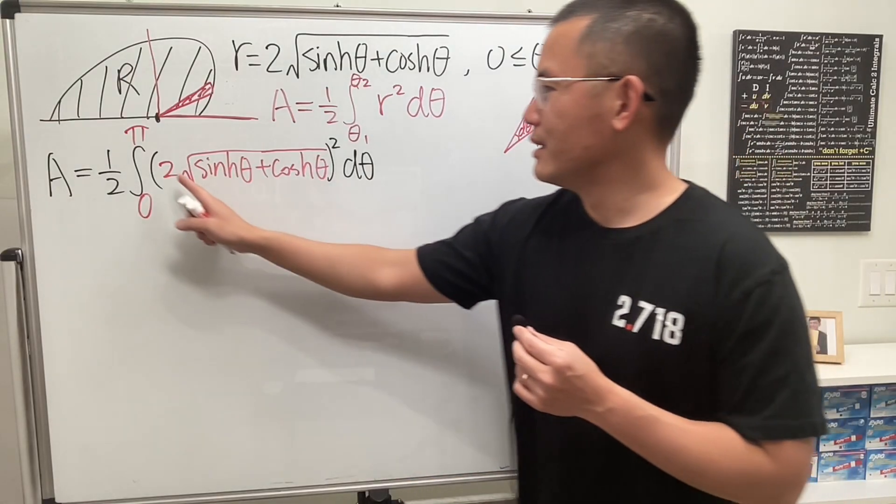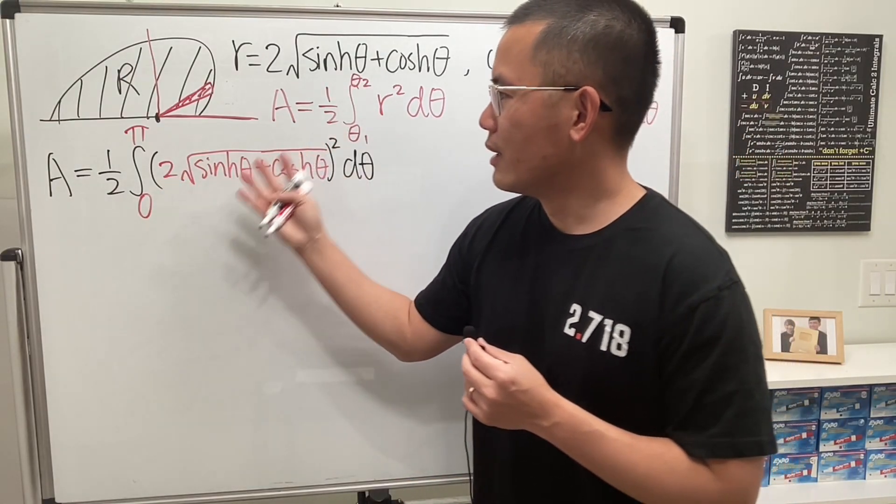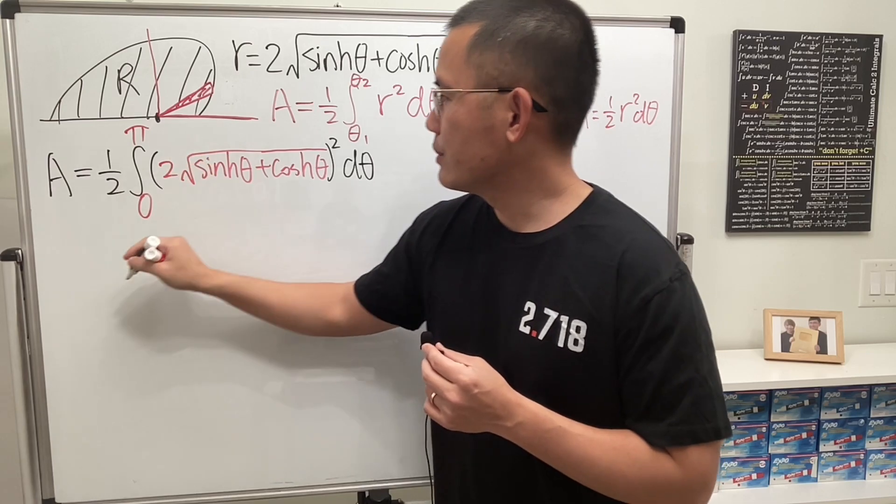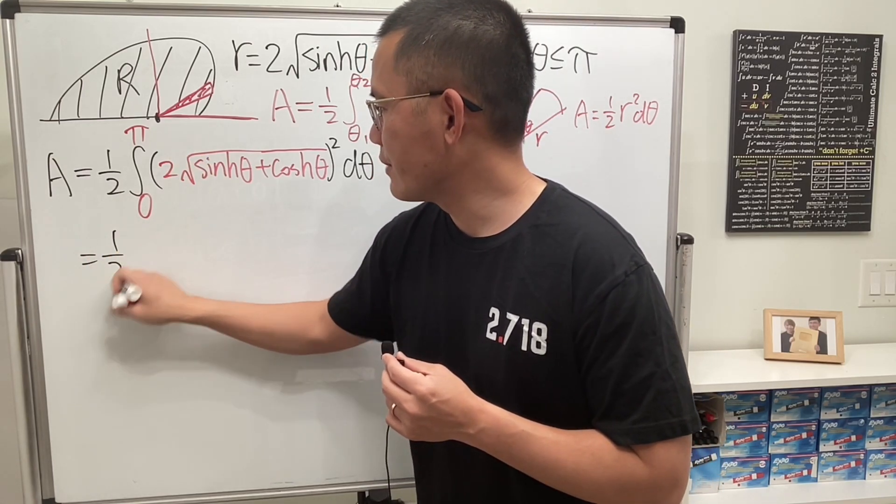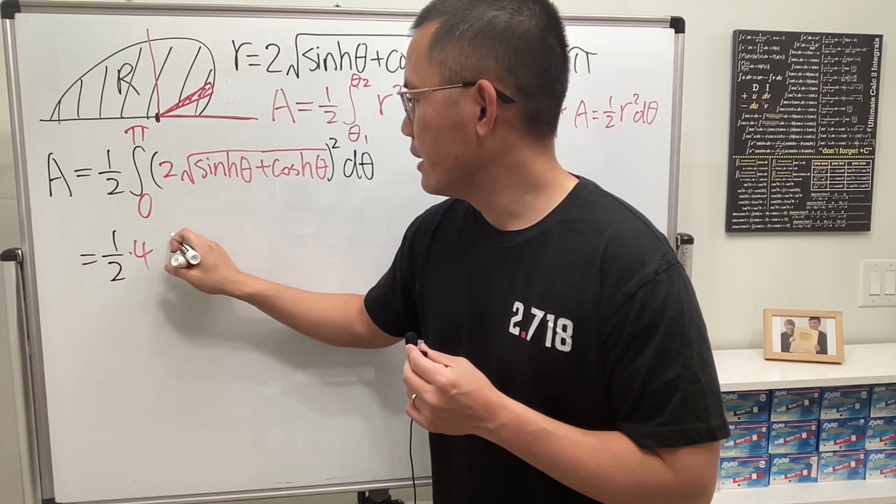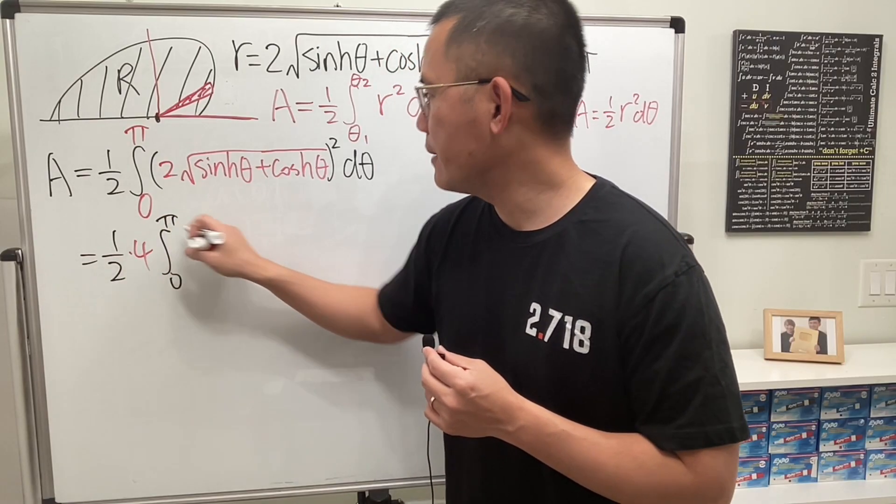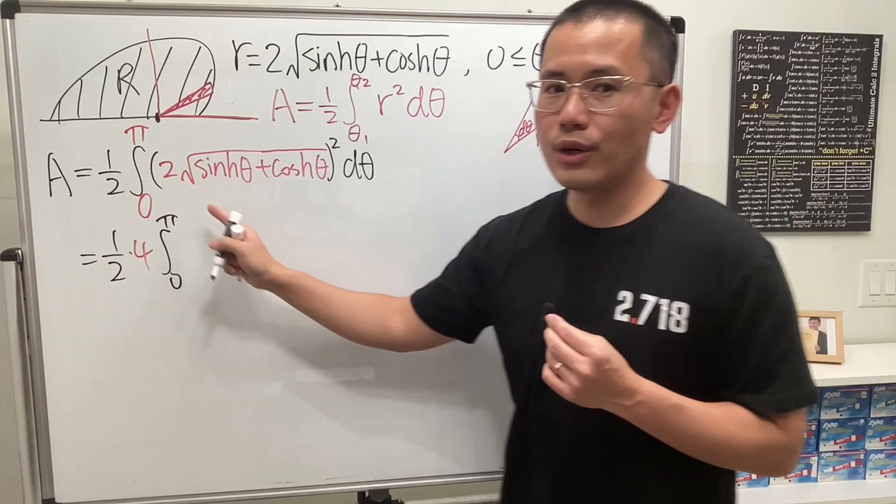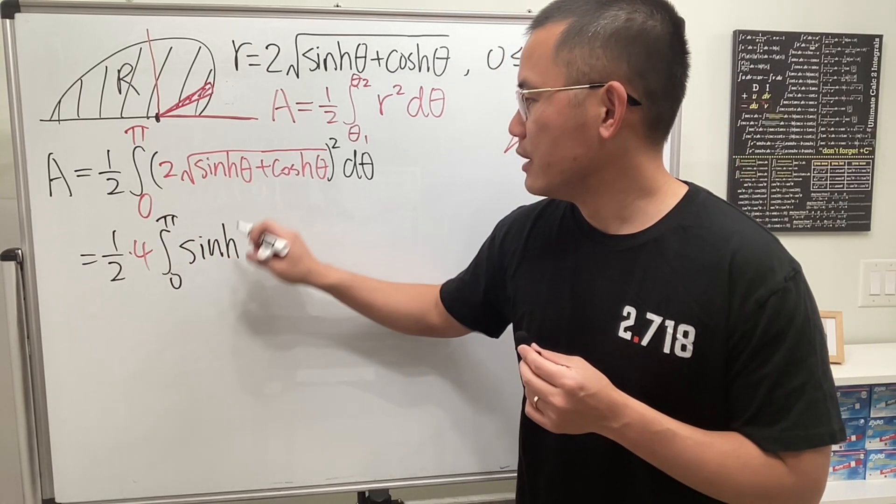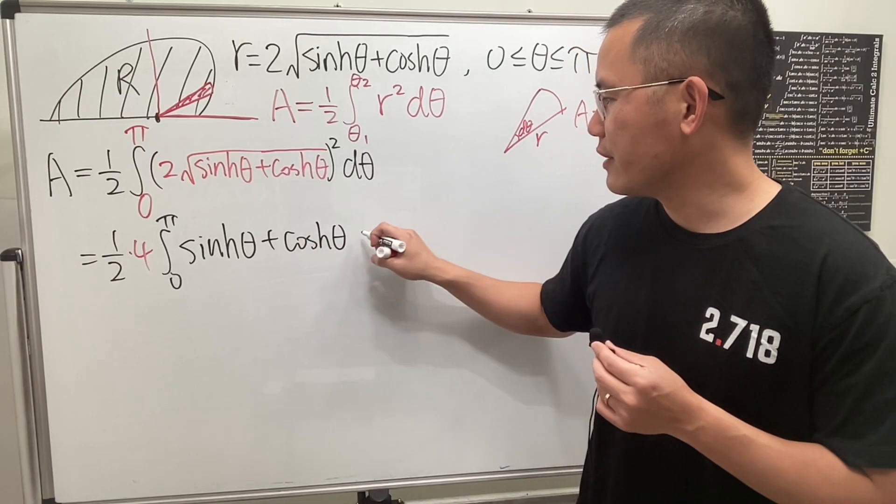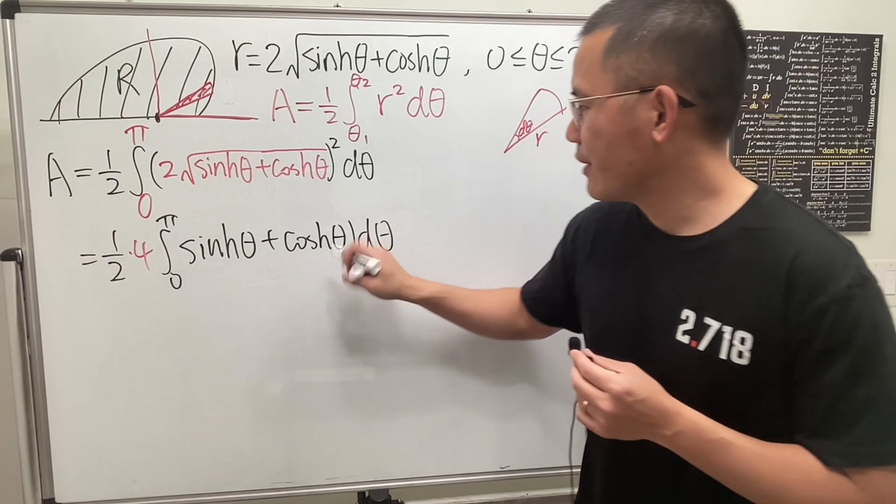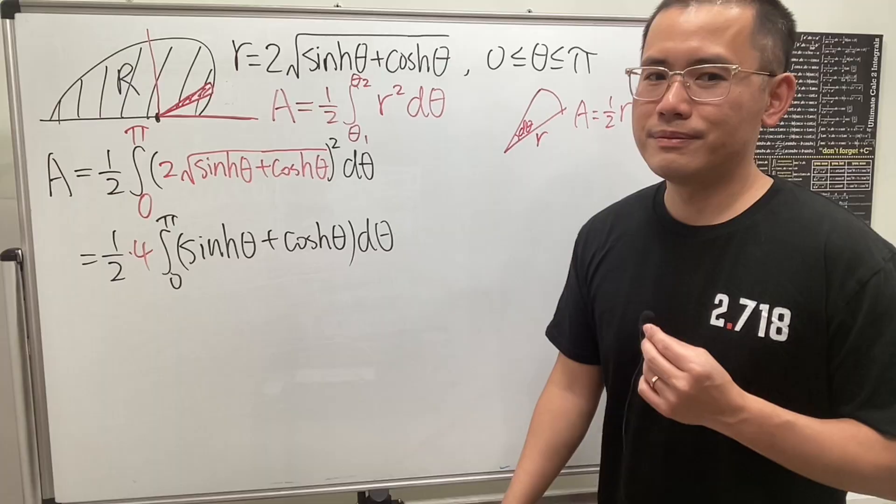Which is not so bad. Now have a look. 2 squared is 4, right? So all this is 4, and then I'm just going to write it down like this. We have 1 half, and let's put the 4 on the outside. Integral going from 0 to pi. Square, square root, cancel. So we'll just have hyperbolic sine of theta plus hyperbolic cosine of theta, d theta. Now put parentheses around it.